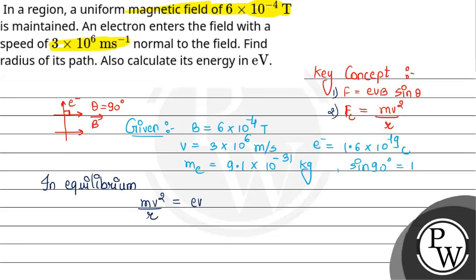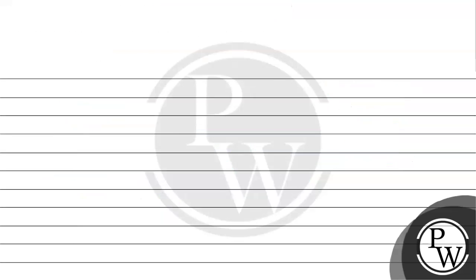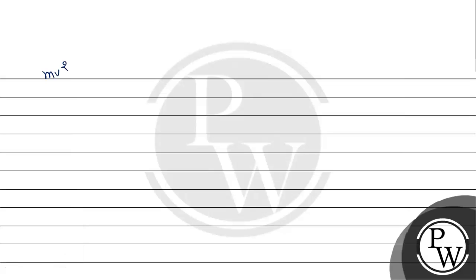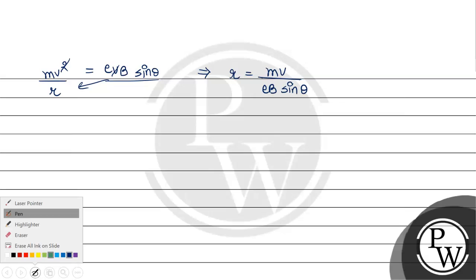In equilibrium, the magnetic force equals the centripetal force. So, evB sinθ = mv²/r. We now solve for r. Cancelling v from both sides, we get: r = mv divided by (eB sinθ). We substitute values to find r.